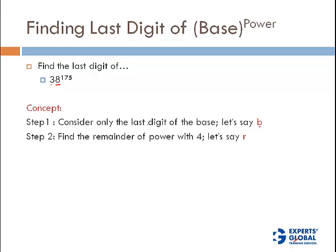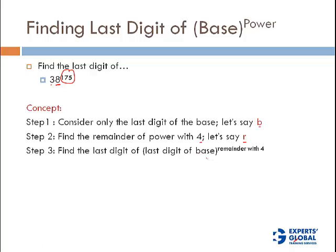Step 2: find the remainder of the power when divided by 4 — the remainder of the power 175, or whatever the power is, always find the remainder with 4; let's call it r. Step 3: find the last digit of b raised to the power r.